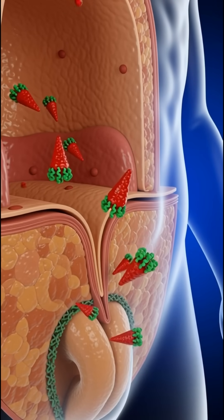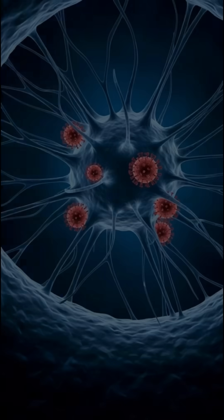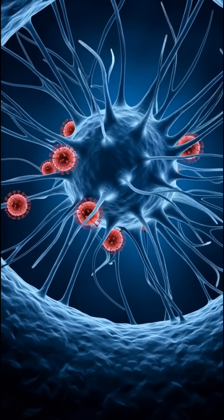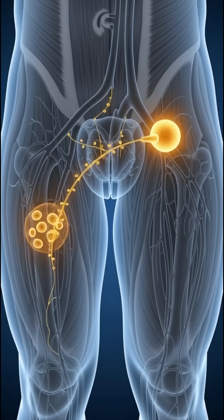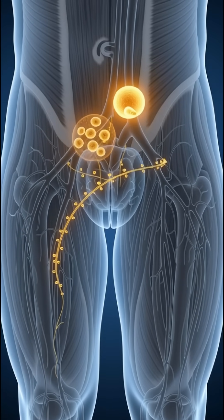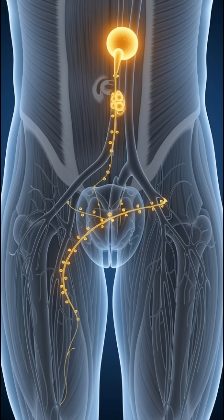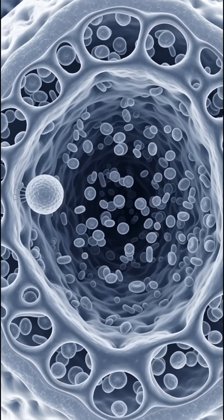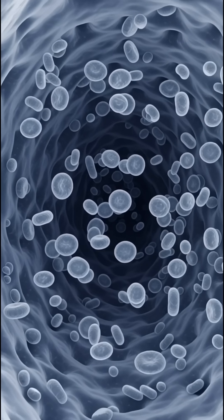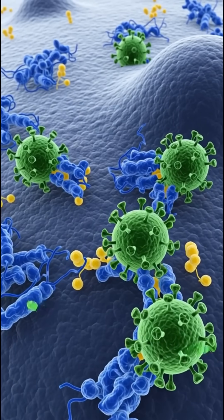The journey of the HIV virus into the human body begins at a mucosal surface, such as during sexual contact, where the virus must cross this protective barrier to establish infection. Upon entry, the virus navigates through the tissue fluid and soon encounters a key player of the immune system, a dendritic cell, which mistakenly captures HIV and carries it like a Trojan horse directly to the lymph nodes.